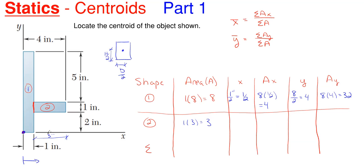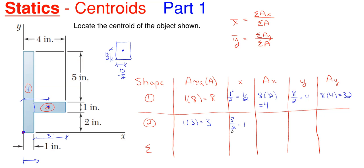Now this is where the trick comes into play for the individual X centroid. Shape number two is not in contact with the origin point, so we need to add the offset. We take half the width of shape two — three divided by two — and then add on the one inch width of shape one to get back to the origin point. That gives us 2.5 inches. Then A times X is three times 2.5, which gives me 7.5.